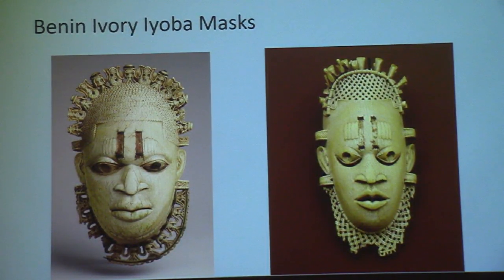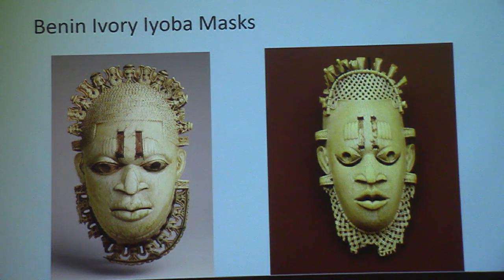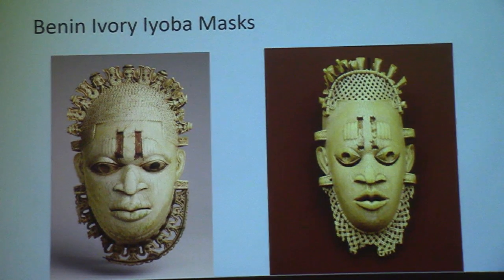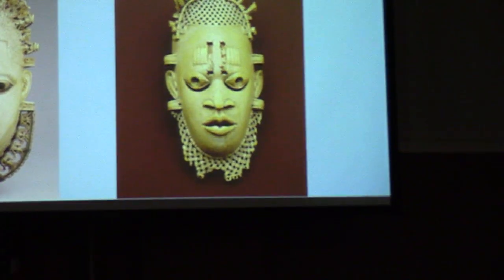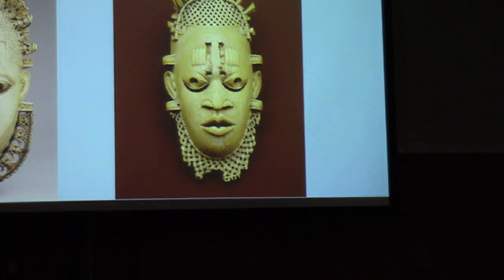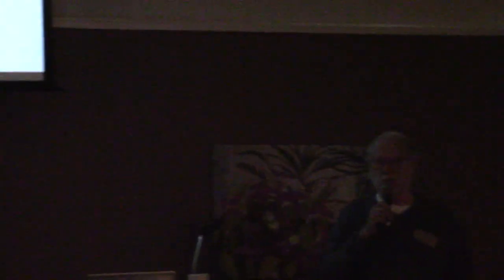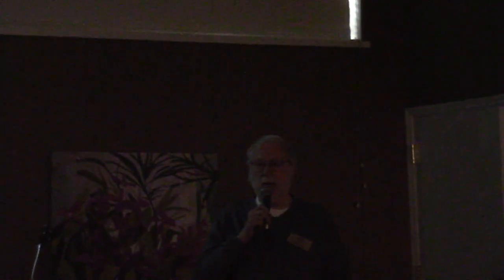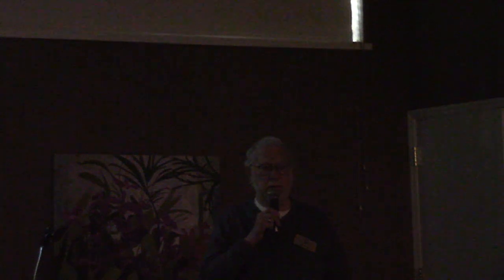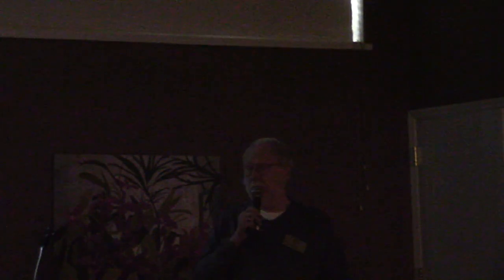Perhaps some of the most significant pieces from Benin are the ivory Iyoba masks carved to the queen mother. There are either five or six of them. One is in the American Museum of Natural History, and one is in the Seattle Art Museum. If such a piece were to come on the market, it would be in the high seven digits — high millions of dollars. Some of the cast bronze Oba heads, the last time one sold, went for a million and a half dollars. So the ivory piece in the Seattle Art Museum is well worth over a million dollars.